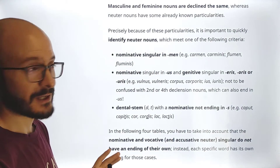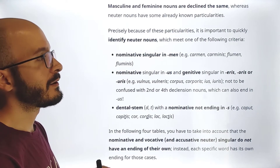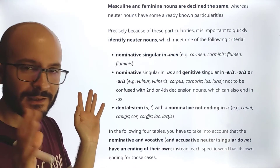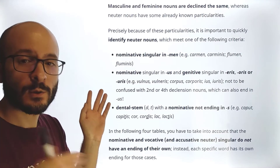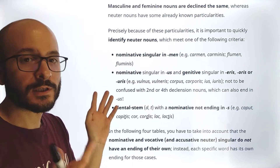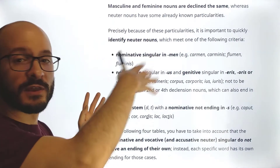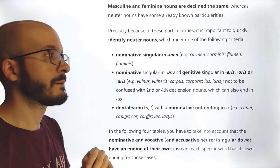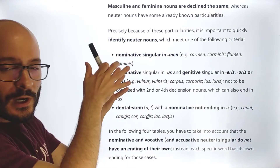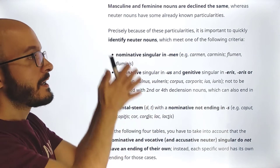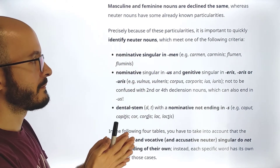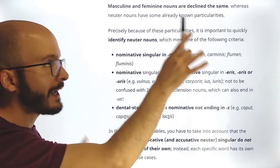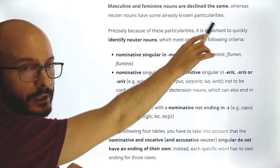I know this is a lot of information, so don't get overwhelmed. With practice we are going to refer to all of these things and you will remember them. So, how to identify neuter nouns of the consonant stem group — they must meet at least one of the following criteria.